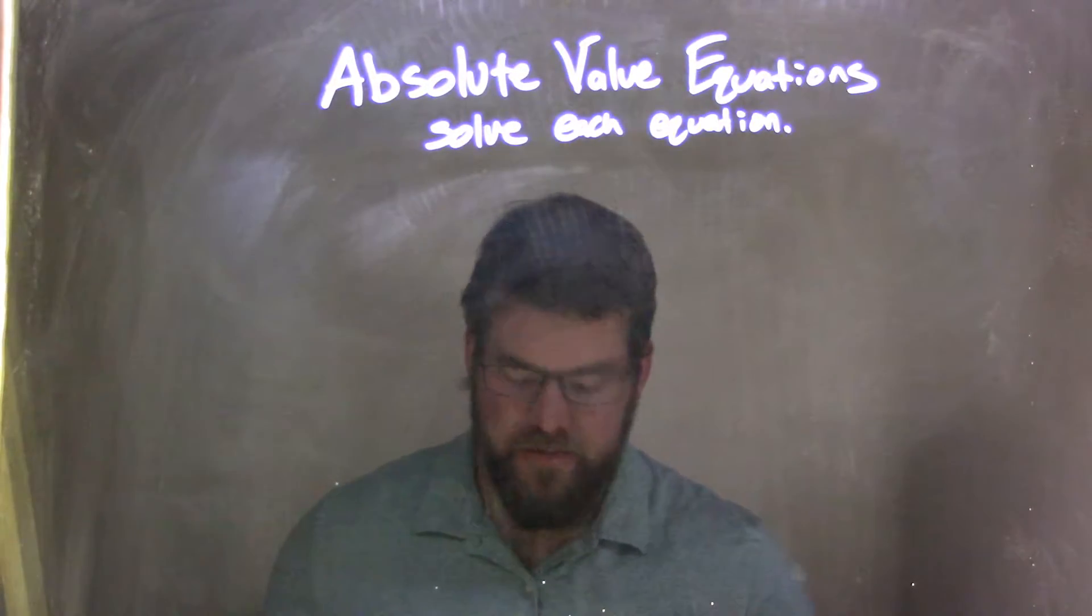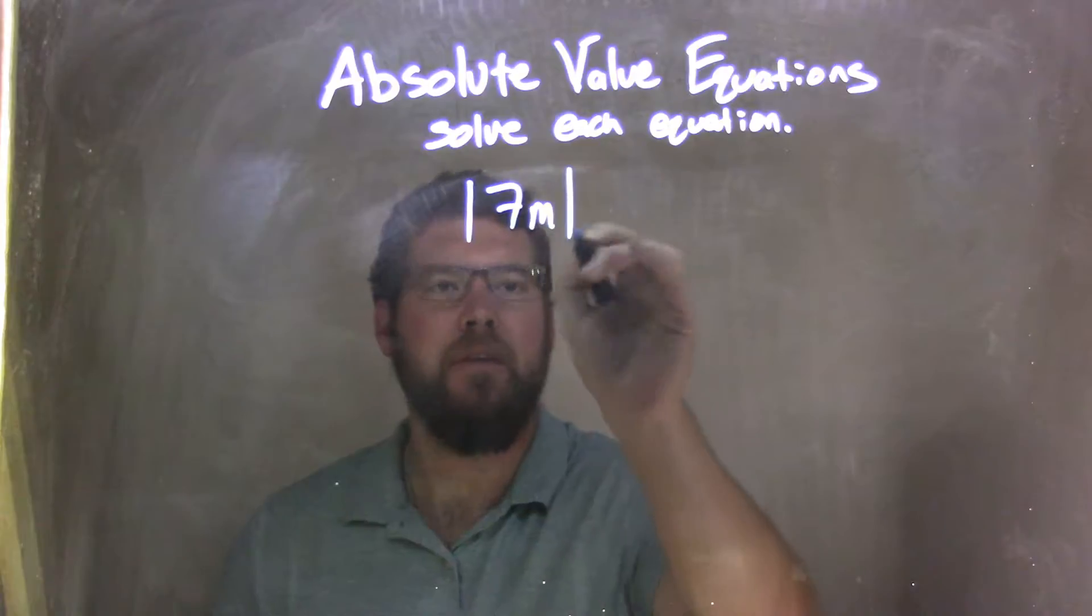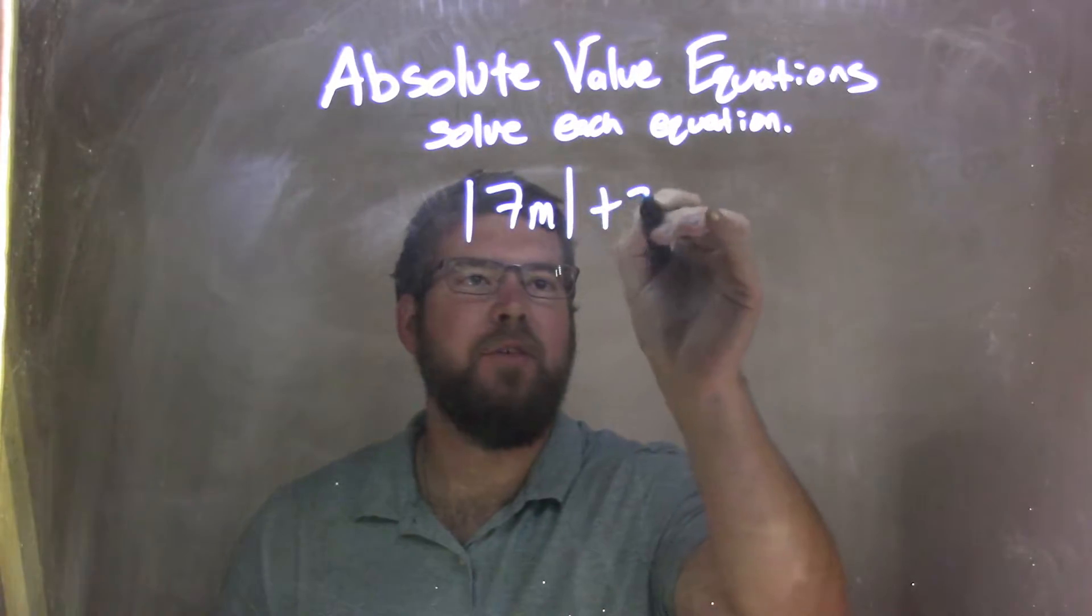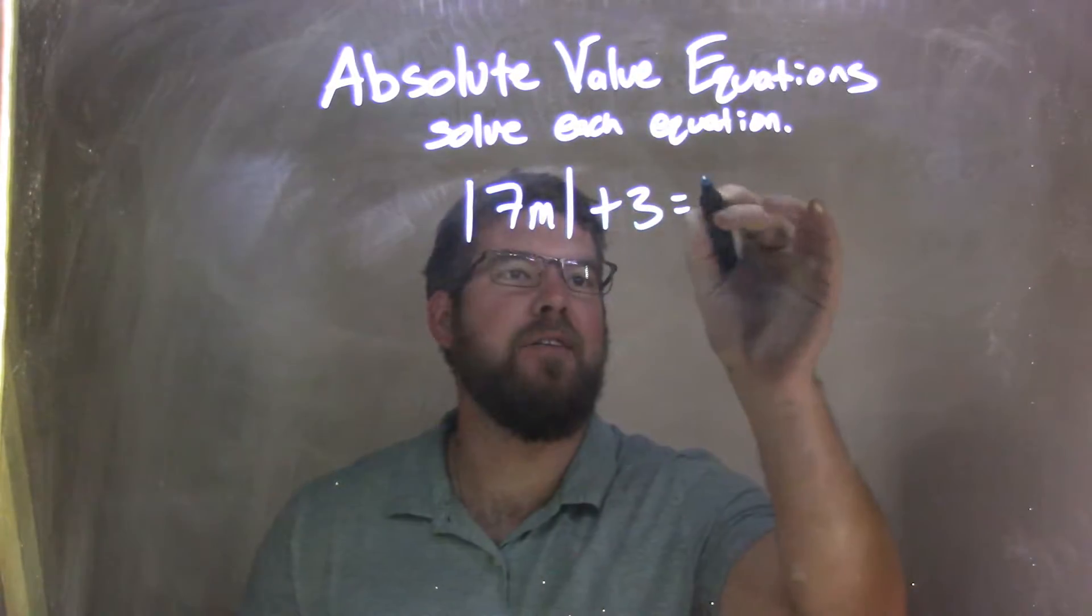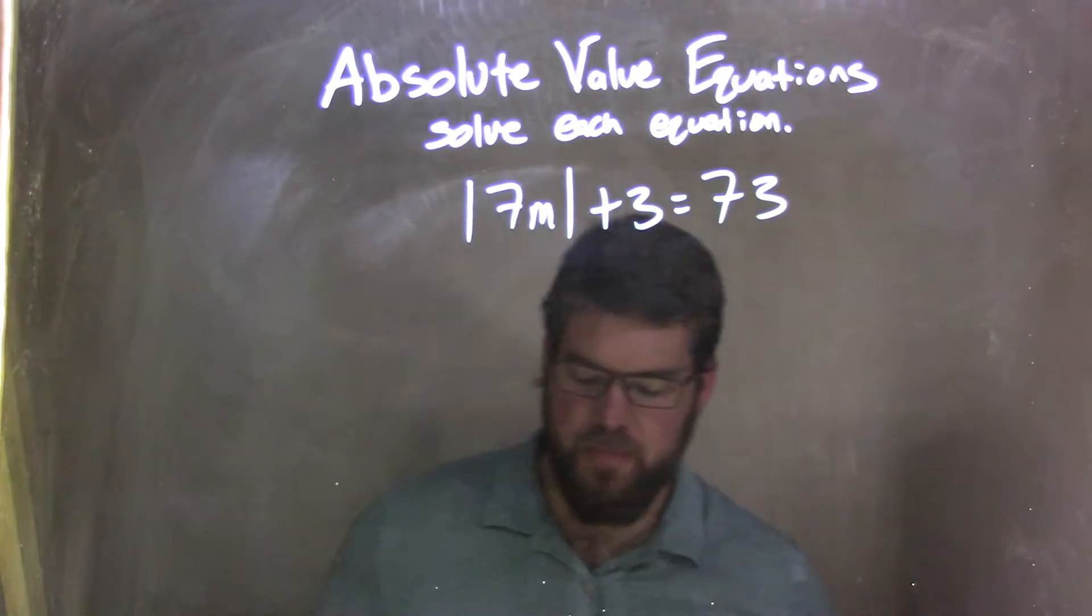So if I was given this equation, absolute value of 7m plus 3 equals 73.